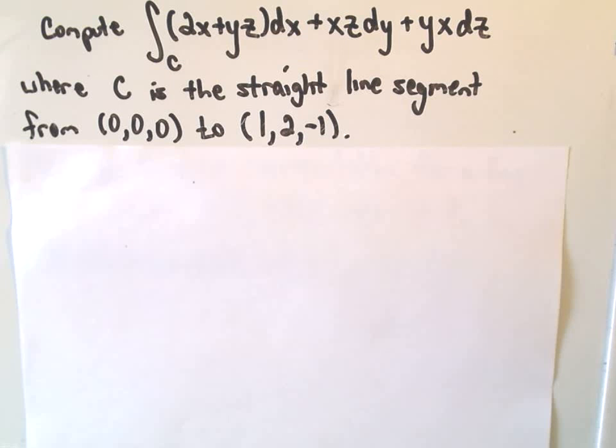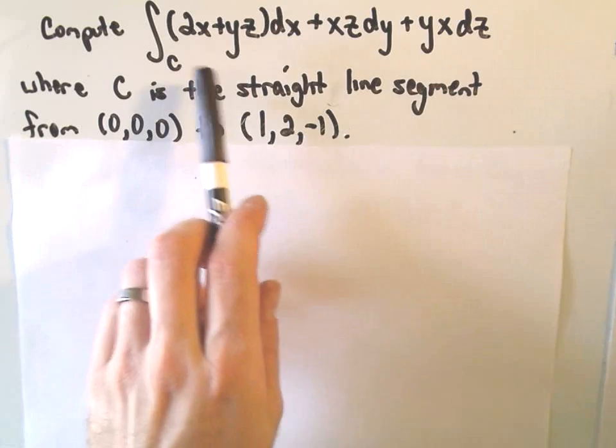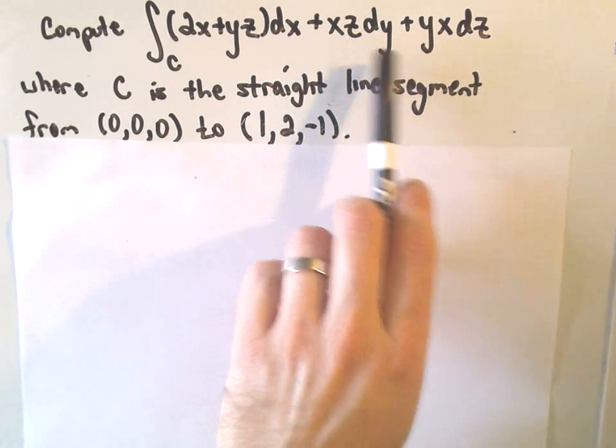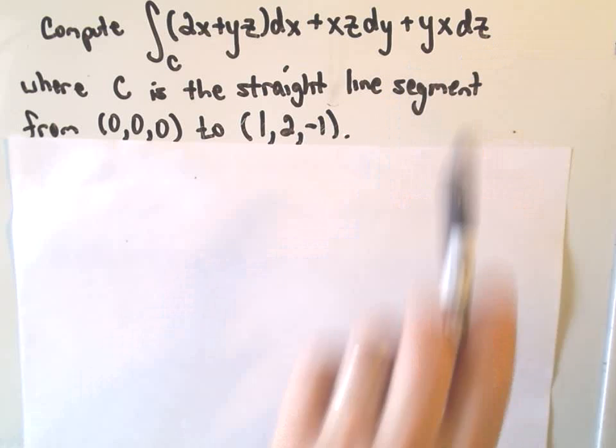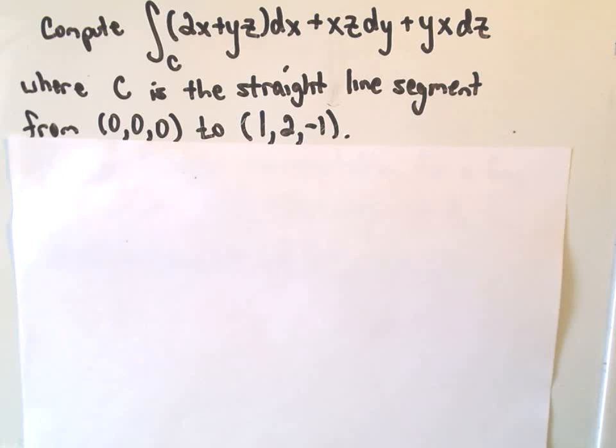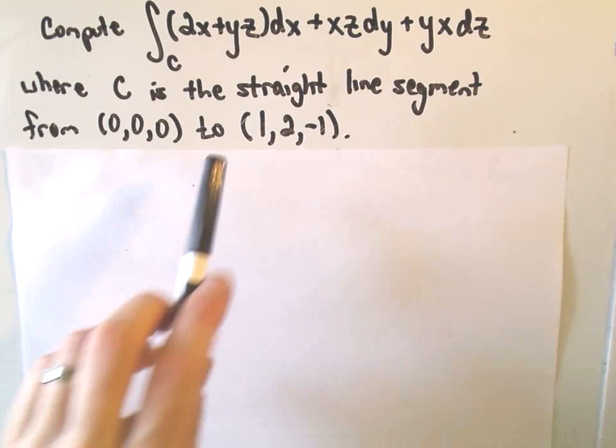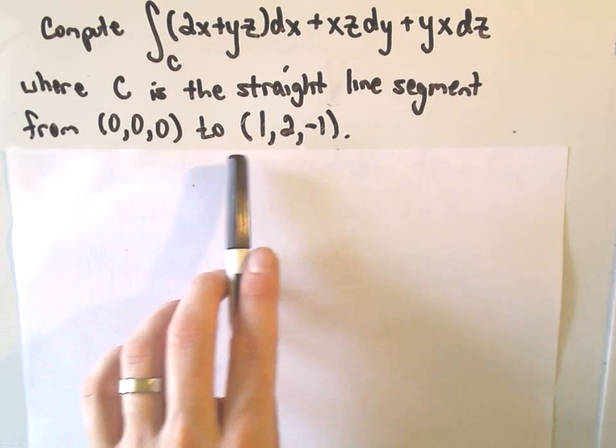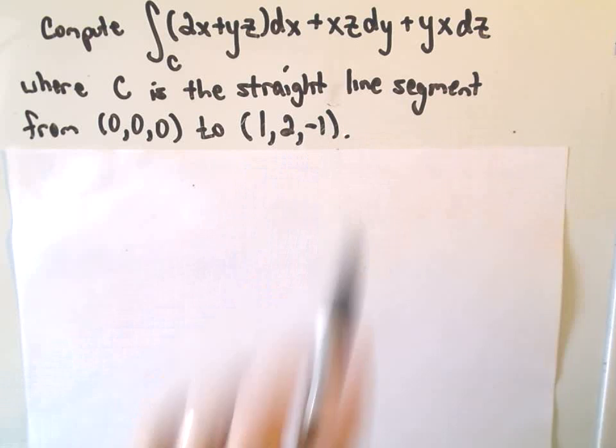Okay, so let's do one here real quick. Suppose we want to compute this line integral. So we've got the curve. We're going to integrate 2x plus yz dx plus xz dy plus yx dz. And c is going to be the straight line segment from the origin 0, 0, 0 to the point 1, 2, negative 1.